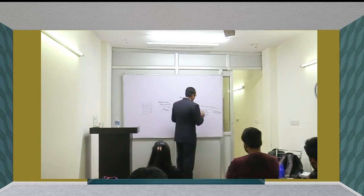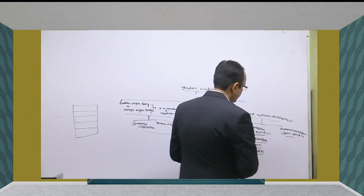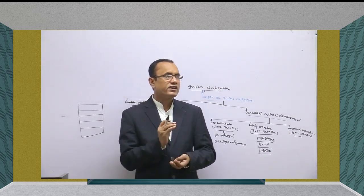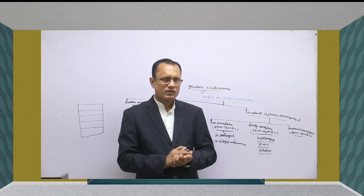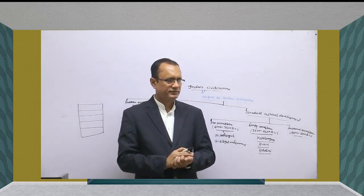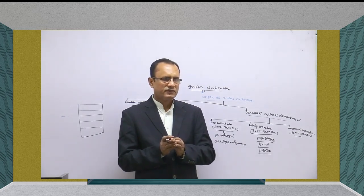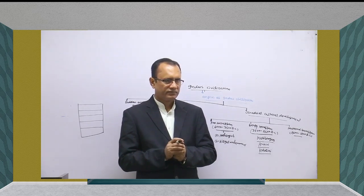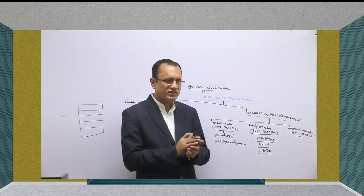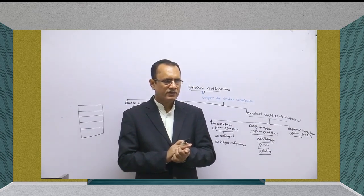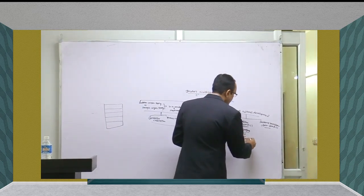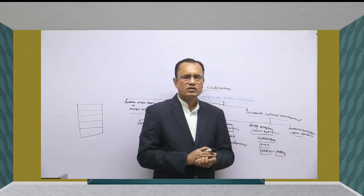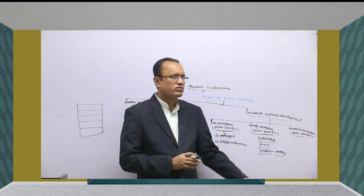The third important site is Kot Diji, where we got evidence about fortification by baked brick. Fortification is the earliest cultural process associated with urbanization — it gives us a sign of the process of urbanization beginning. We also got a special type of pottery from Kot Diji which is similar to the pottery found from Mature Harappan civilization — red ware with black painted designs.